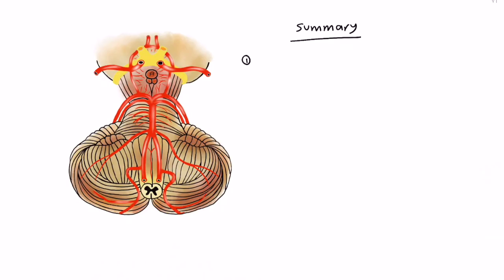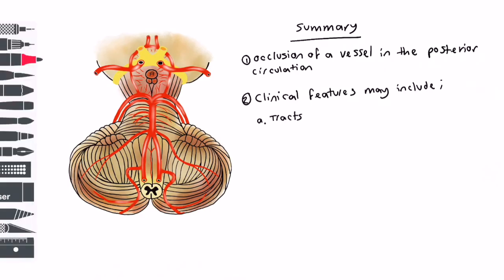So, to recap, brainstem strokes are typically caused by an occlusion of a vessel in the posterior circulation. Signs and symptoms include those associated with the three main functions of the brainstem. Damage to the tracts may present with a motor or sensory disturbance, ataxia, or Horner's syndrome.